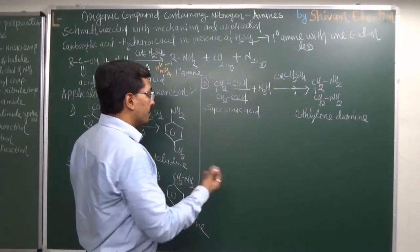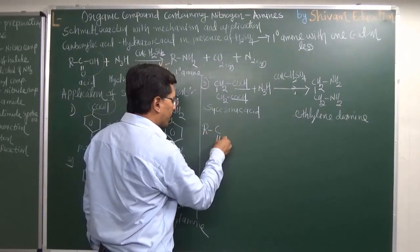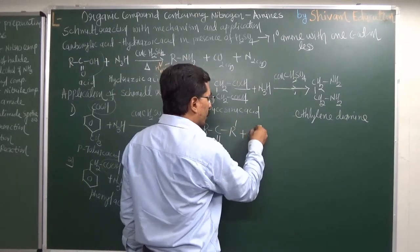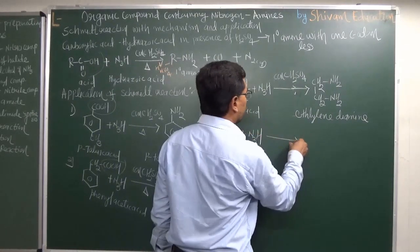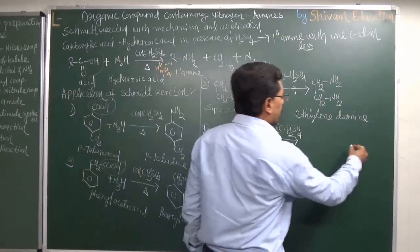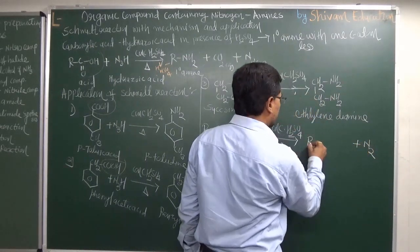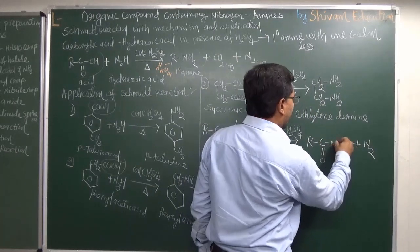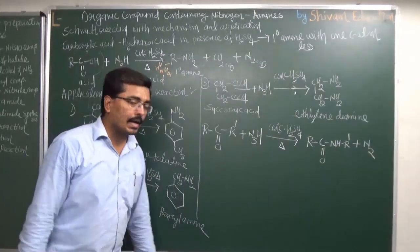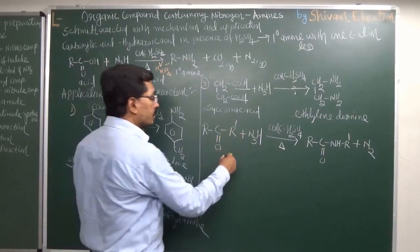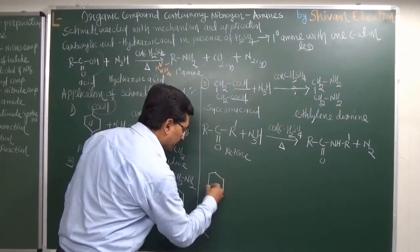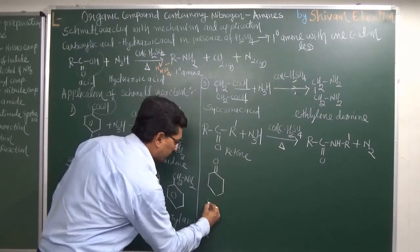Ketones are also converted into a different type of product via the Schmidt reaction. When a ketone is allowed to react with hydrazoic acid in the presence of concentrated sulfuric acid and heated, nitrogen gas is removed and we get an N-alkyl amide structure: R-C(=O)-NH-R'. So ketones also give Schmidt reactions, but the product is an amide.